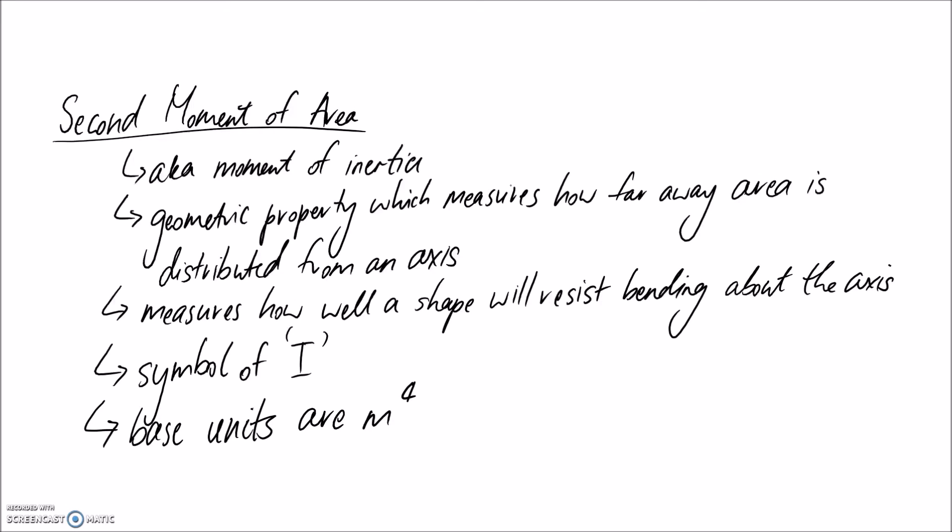So the symbol for second moment of area is an I, and the base units are metres to the fourth. Now, often though, we're going to be measuring these things in millimetres to the power of four. But it's all the same, just a matter of unit conversions.